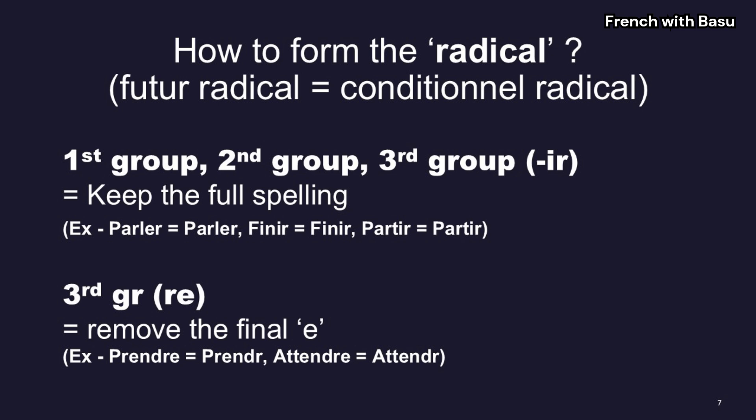For the second group, ir-ending verbs, and the third group ir-ending verbs, we keep the full spelling of the verb as it is. For example, finir of the second group will remain finir. Partir of the third group will remain partir. As for the third group re-ending verbs, we remove the final e and keep the r — that will be the radical for conditionnel présent. For example, prendre: the final e is removed, giving prendr. Attendre: the final e is removed, giving attendr.